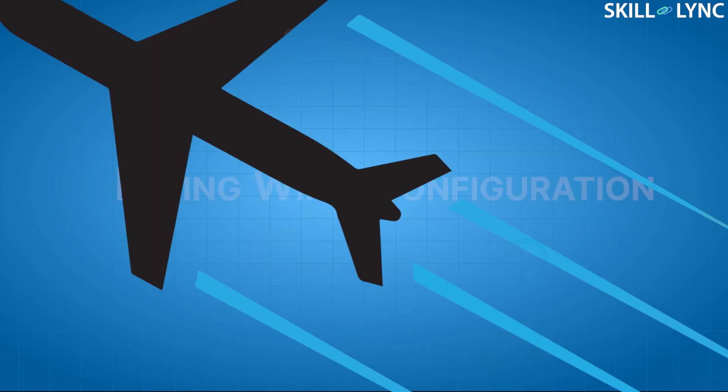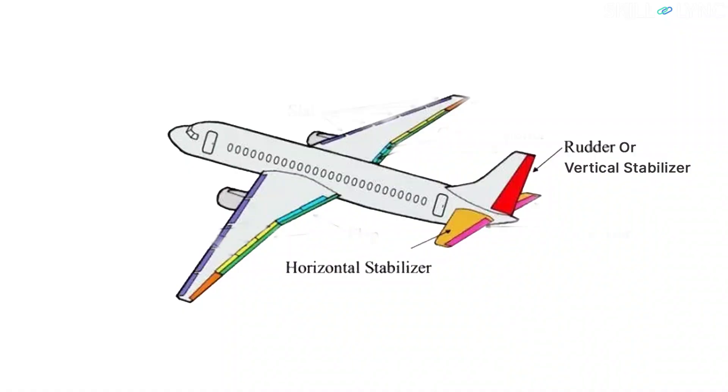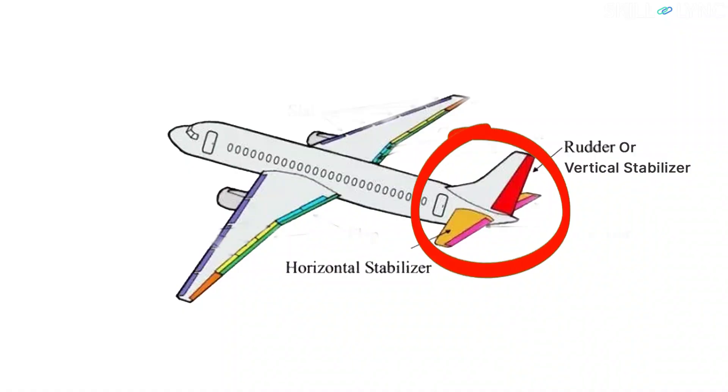Hey guys, welcome to the channel. In today's video, we are going to talk about a very specific type of aircraft design. It is called the Flying Wing Configuration. The Flying Wing is a type of aircraft design which uses no vertical or horizontal stabilizer.